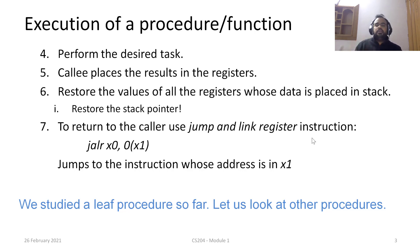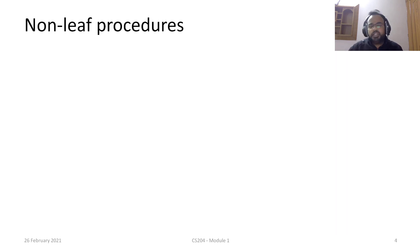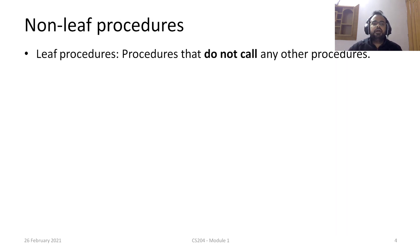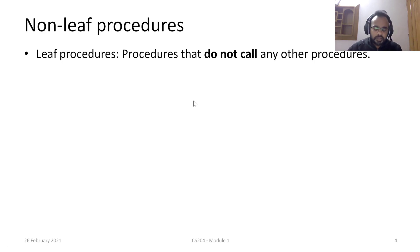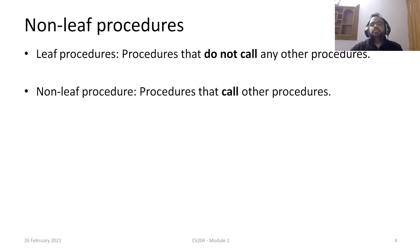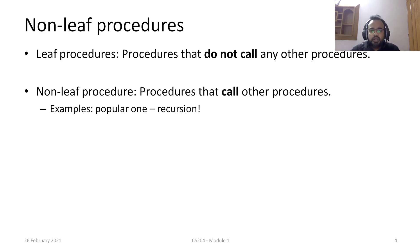Now let's look at procedures which might call other procedures or call themselves — these are called non-leaf procedures. A leaf procedure is one that does not call any other procedures; once its logic is executed, control simply returns to the caller. Non-leaf procedures also return to the caller, but they can call other procedures in the process, or call themselves — the most popular example being recursion.